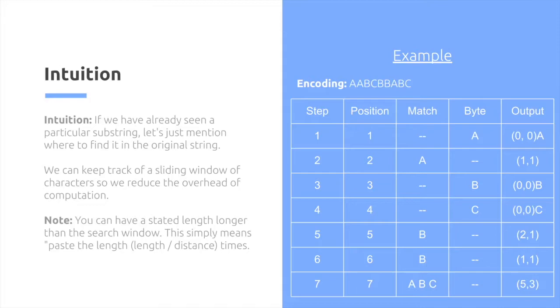And in step 5, we've seen a B before. So you can reference it as a second character with a length of 1 because the string isn't BC, it's BB.